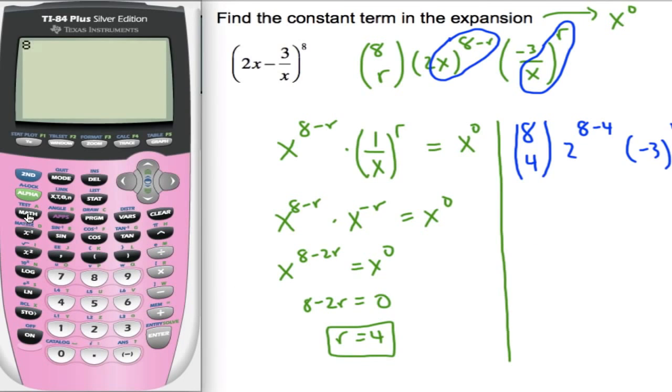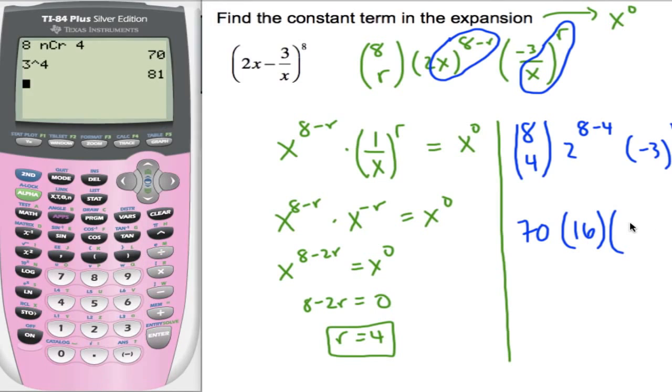I'll go over to my calculator. 8 choose 4 is 70, times 2 to the 4th, which is 16, times 3 to the 4th, 81. So that's, yeah, positive 81. So 70 times 16 times 81 is our coefficient, 90,720.